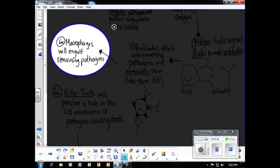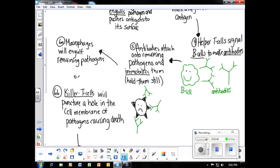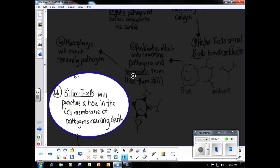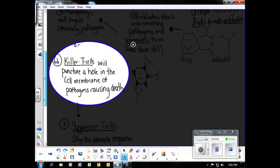Step six of the immune response is that macrophages can now engulf the remaining pathogens or we can signal another type of white blood cell in the body called killer T cells. Killer T cells' job is to puncture a hole in the cell membrane of pathogens. If we puncture a hole in the cell membrane, it will cause death.